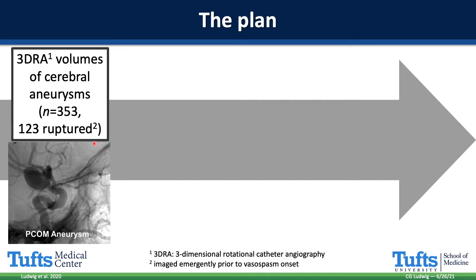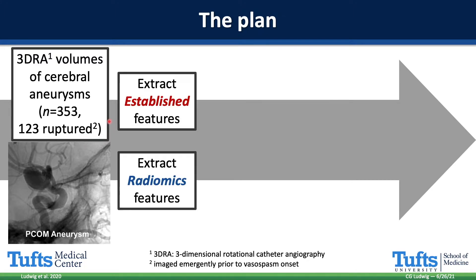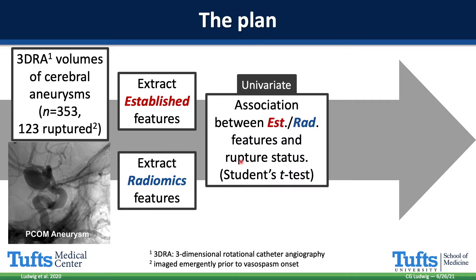I started with 353 three-dimensional rotational angiography volumes of cerebral aneurysms, 123 of which were already ruptured but pre-vasospasm at the time of imaging. From every single aneurysm I extracted established features — those previously reported and validated in the literature — and then 13 shape radiomics features. For a univariate analysis, I tested the association between established features and rupture status, and then radiomics features and rupture status, using a Student's t-test.